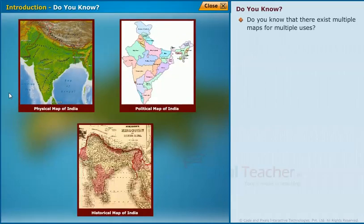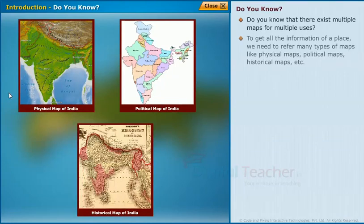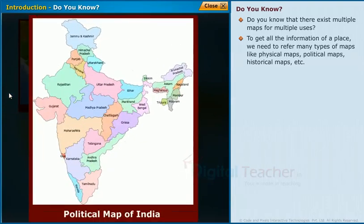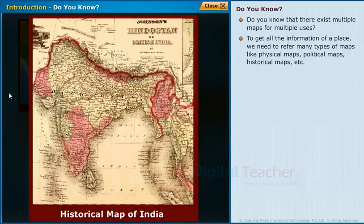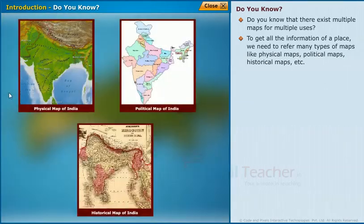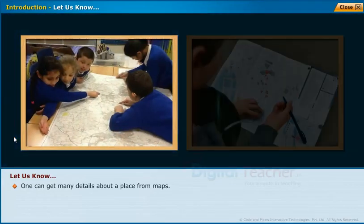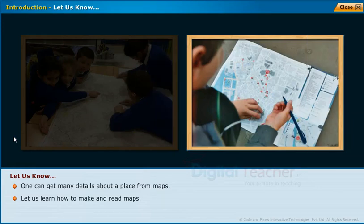There exist multiple maps for multiple uses. To get all the information of a place, we need to refer to many types of maps, such as physical maps, political maps, historical maps, etc. One can get many details about a place from maps. Let us learn how to make and read maps.